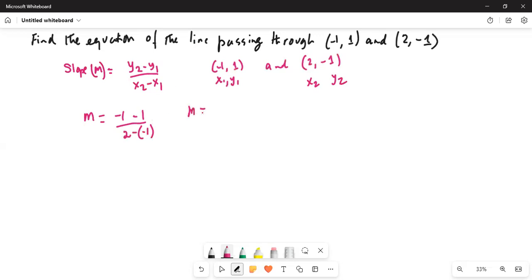So m is equal to -1 minus 1. Both are minus, we add them up and keep the negative sign. And in the denominator it is 2 minus (-1). Two minuses make a plus, so it is -2 over 3.